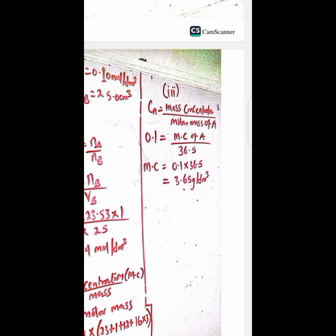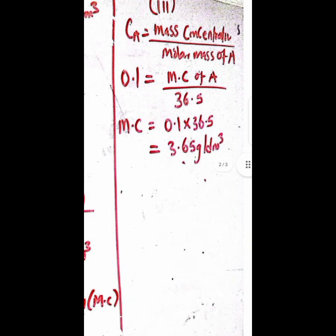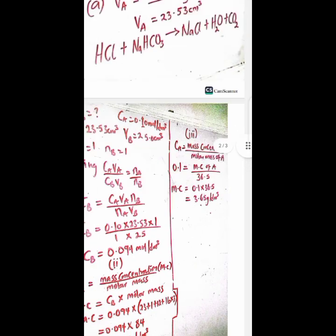So which means we just have to substitute it here to find the mass concentration of A provided we know the molar mass. So then the mass concentration would be molar concentration times the molar mass which is 36.5, you know that is HCl. So that is how we got that.